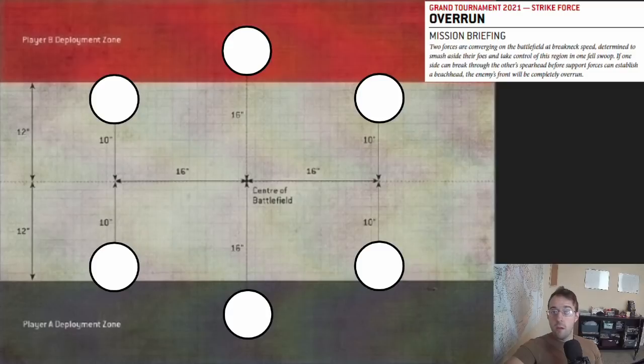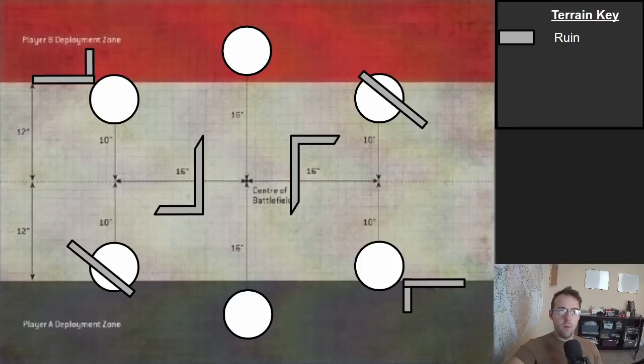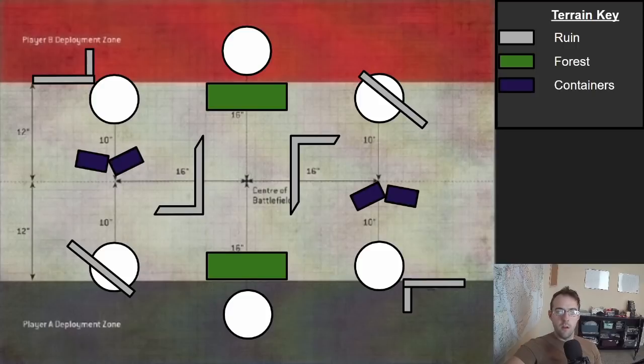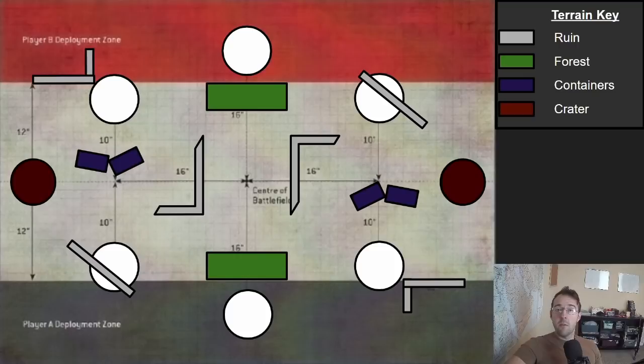After a mission is picked you then put terrain on the board. The terrain I'm going to be using is based off of tournaments I've gone to as well as the advice that Games Workshop puts out in their tournament packets. We'll place six different pieces of ruins that are symmetrical along a diagonal, a couple of forests, some containers to help break up the sides of the map, and then some craters. My recommendation is that if you're playing a game that doesn't have at least eight pieces of obscuring terrain, you probably need more terrain on your map.